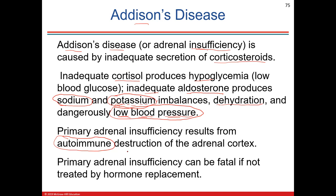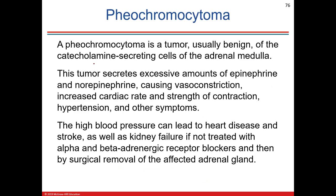Pheochromocytoma is a tumor of the adrenal medulla that produces excess epinephrine — a catecholamine based on the amino acid tyrosine. This causes excessive amounts of adrenaline and noradrenaline, leading to high blood pressure from systemic vasoconstriction and tachycardia with increased cardiac rate and excessively strong contractions, creating high oxygen demand.